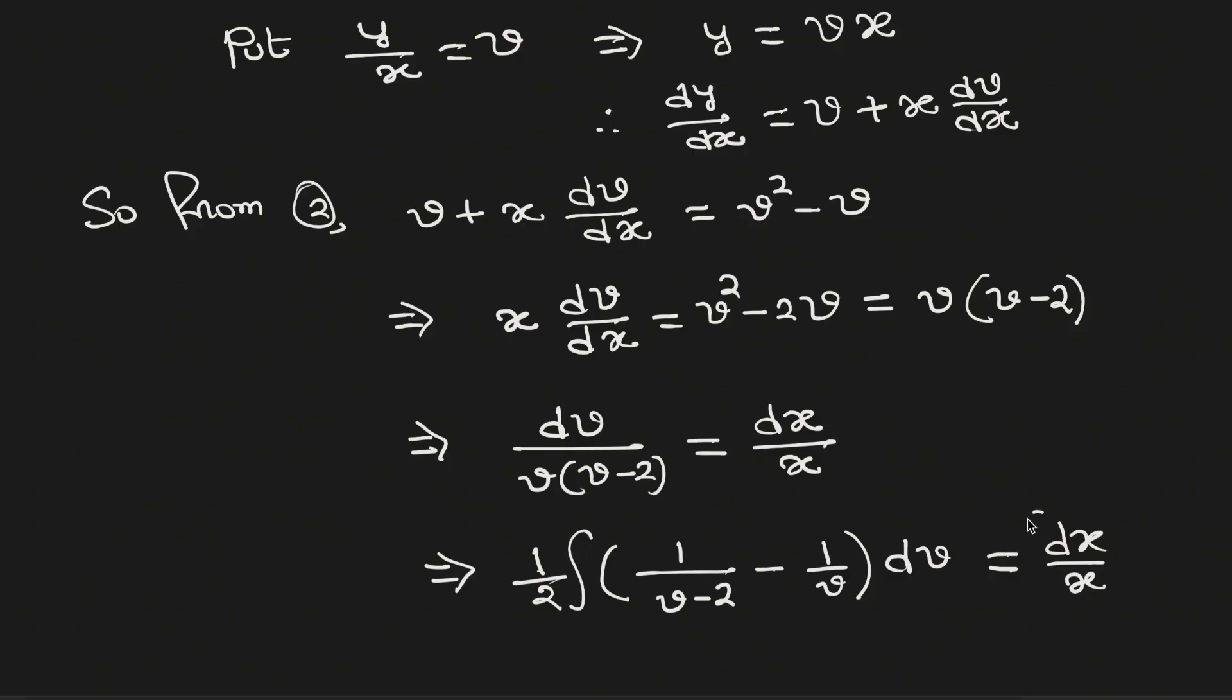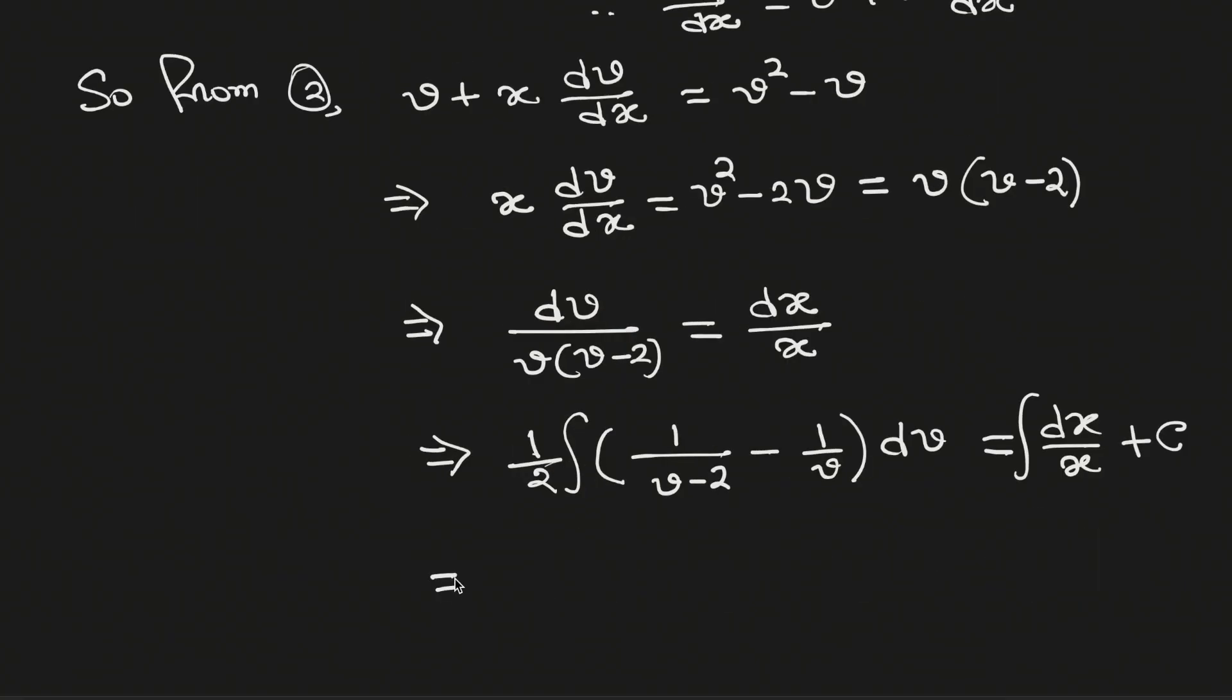Now integrate both sides. We need to add integration constant c. The left hand side becomes 1/2 times (ln(v-2) minus ln(v)) equals ln(x) plus integration constant c.